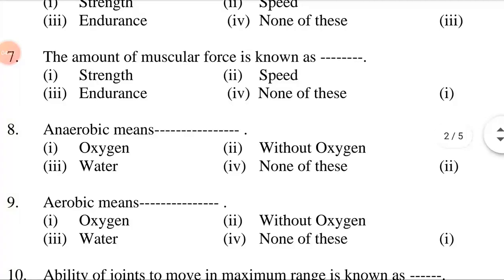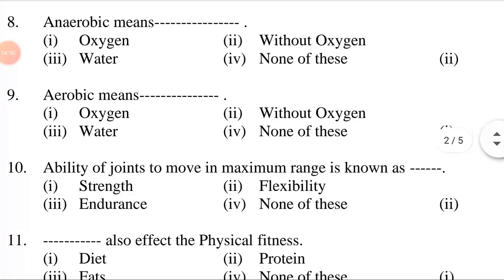The amount of muscular force is known as dash. First option: strength. Second option: speed. Third option: endurance. Fourth option: none of these. The answer is option one — strength. The amount of muscular force is known as strength. Anaerobic means dash. First option: oxygen. Second option: without oxygen. Third option: water. Fourth option: none of these. The answer is option two — without oxygen. Anaerobic means without oxygen.